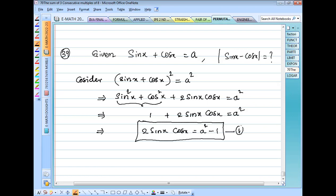Now take the given question which says that |sinx - cosx|. This can be written as √((sinx - cosx)²).